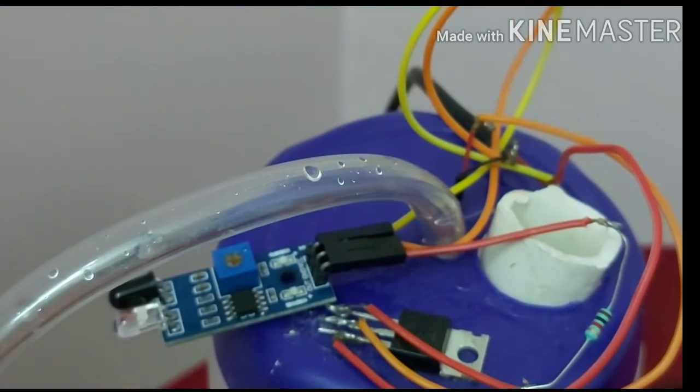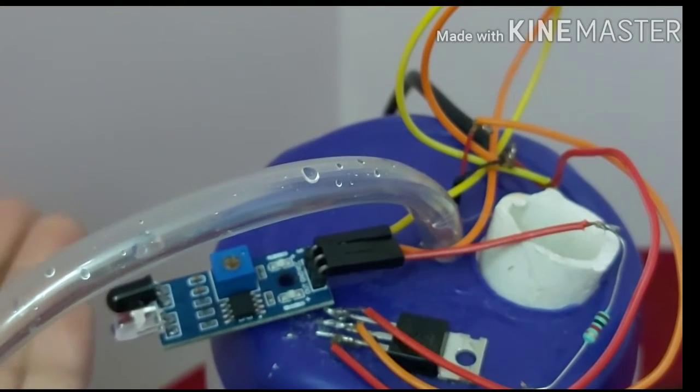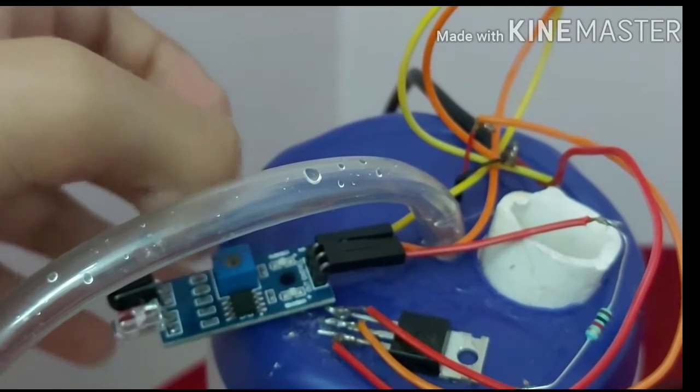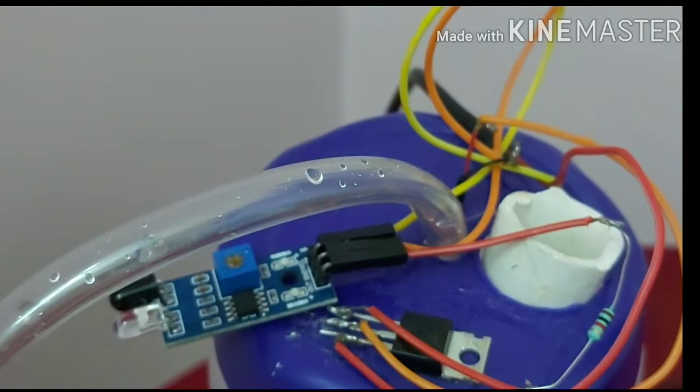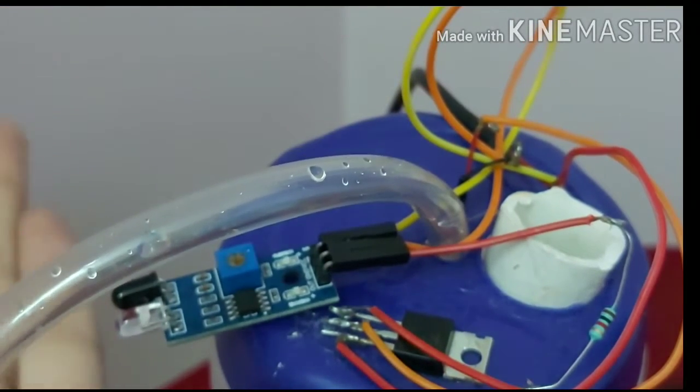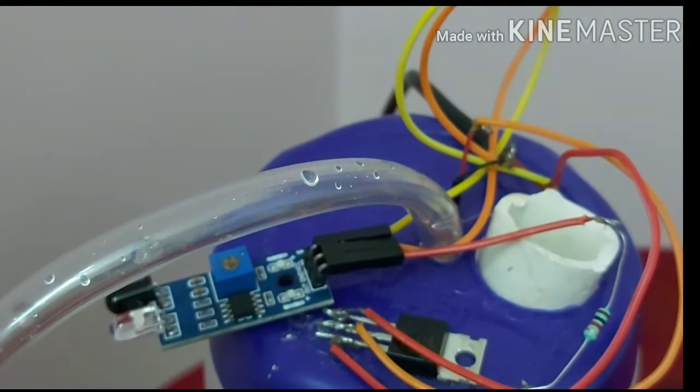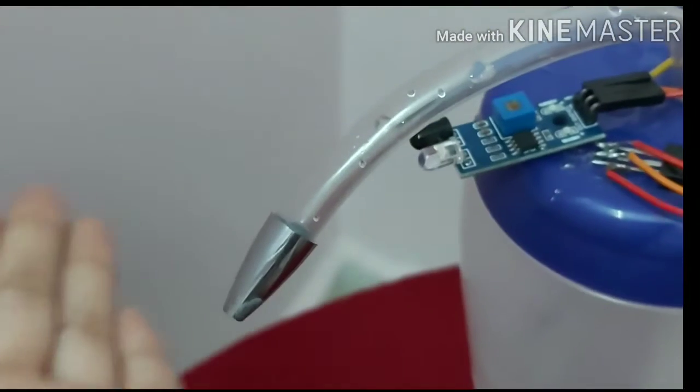This is the preset through which we can arrange the distance or maintain the distance for getting the sanitizer. If I have twisted it to the left side, I can get sanitizer by placing my hand just in front of these LED lights. If I turn it to the right side, I can adjust the distance.